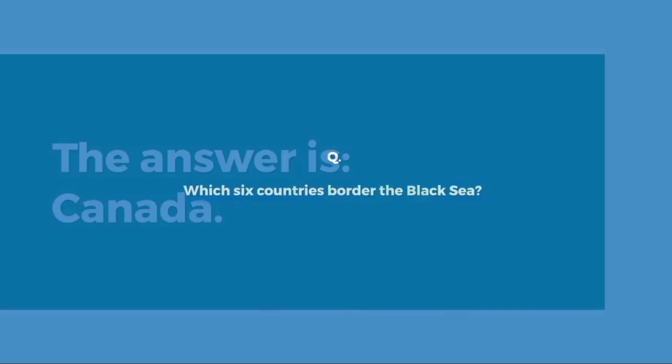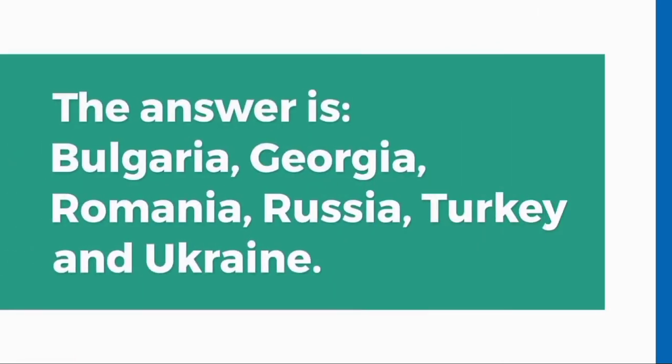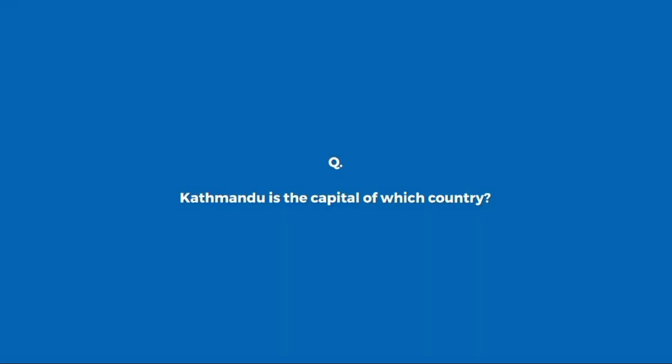Which six countries border the Black Sea? Bulgaria, Georgia, Romania, Russia, Turkey, and Ukraine.